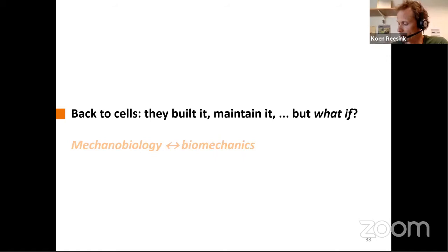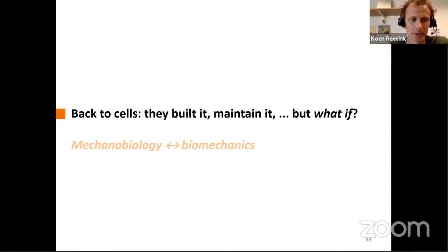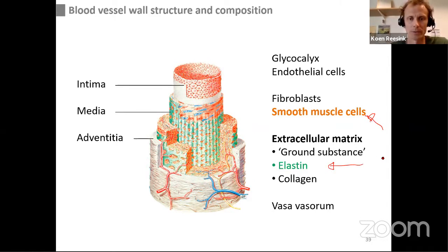Looking at the vessel, that's as basic as vascular mechanics can go. But importantly, it's cells that are doing this. Back to cells: they built the vessel, and they maintain it. This takes us into mechanobiology and biomechanics. The main actors in smooth muscle cells and elastin in arterial aging — let's now say a little more on smooth muscle cells.